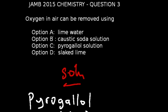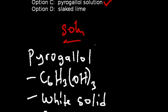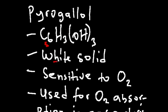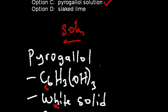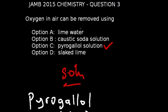Question number three of JAM 2015 chemistry: Oxygen in air can be removed using — the correct answer is option C. To back up our answer, let us look at key facts about pyrogallol solution. Pyrogallol is an organic compound with the molecular formula C6H3(OH)3. It is a white solid and is very sensitive to oxygen, and because of that it is used for oxygen absorption in gas analysis. That makes option C the correct answer.